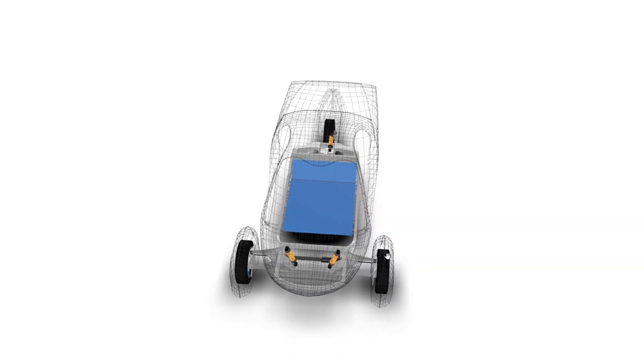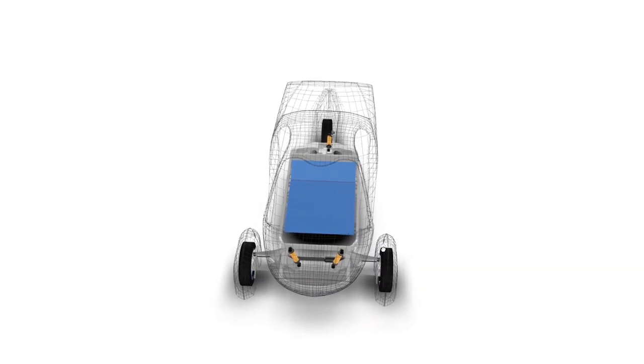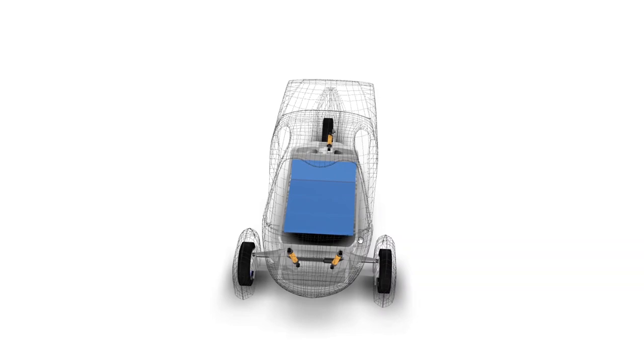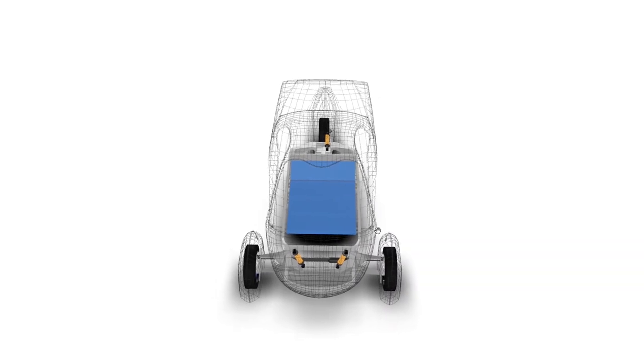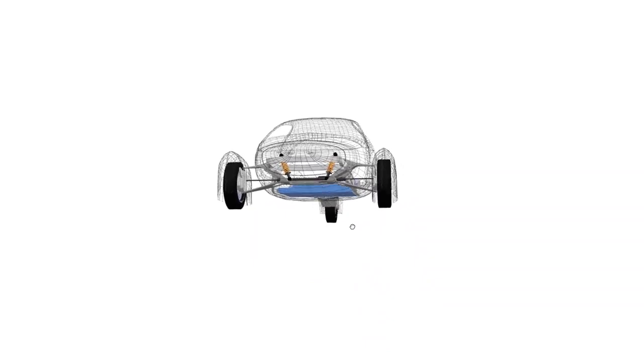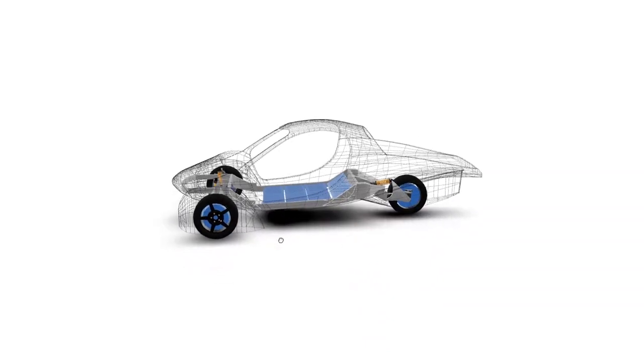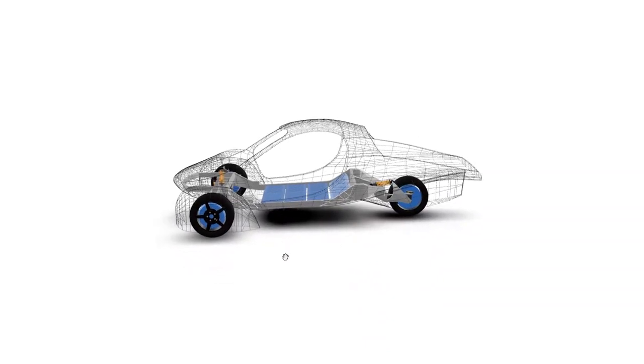And then it would essentially just shear off the front wheel and make a glancing blow. And you would have essentially no damage into the passenger compartment. Which I think would make Aptera test very well on the small frontal offset test.